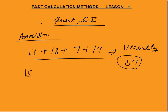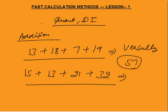Another example: 15 plus 13 plus 21 plus 32. You must be able to add these numbers verbally. 15 plus 13 is 28. 28 plus 21 is 49. 49 plus 32 — if you are not able to add straight, add 49 plus 2 to get 51, then add 30 to get 81.